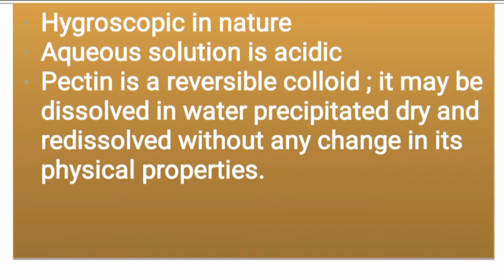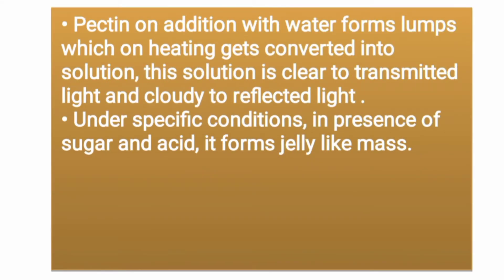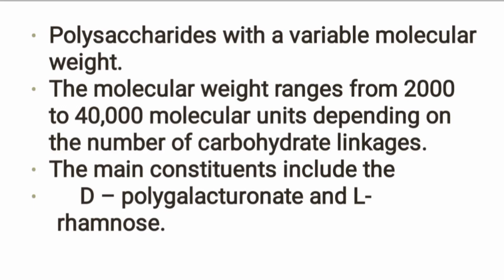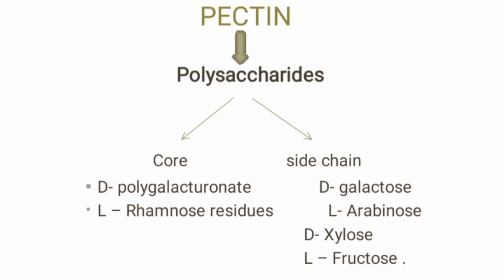When pectin contacts water it forms a lump, so the solution needs to be heated. When used with transmitted light it appears clear; otherwise it appears cloudy — that is the colloidal solution. In good conditions with sugar and acid, we can form a gel — like pepper jellies. Chemical constituents are polysaccharides, with a molecular weight of 505 molecular units. The core consists of polygalacturonate and L-rhamnose linkages, with galactose, arabinose, xylose, and fructose also present.